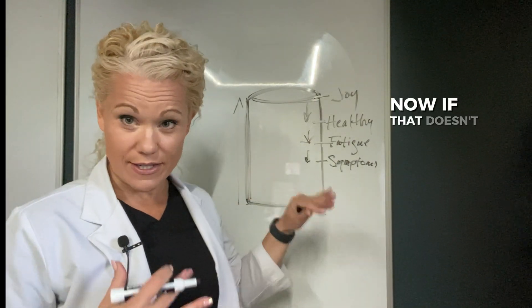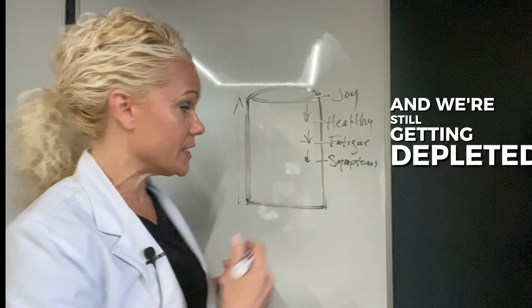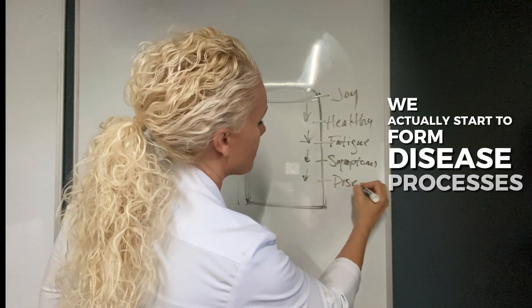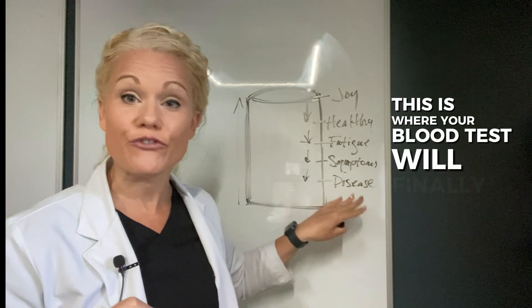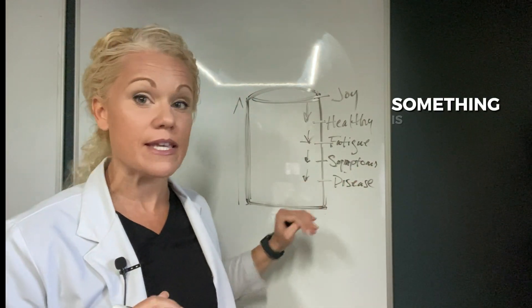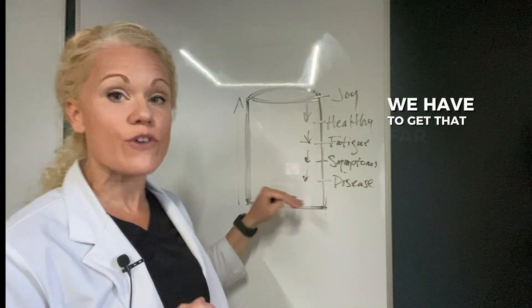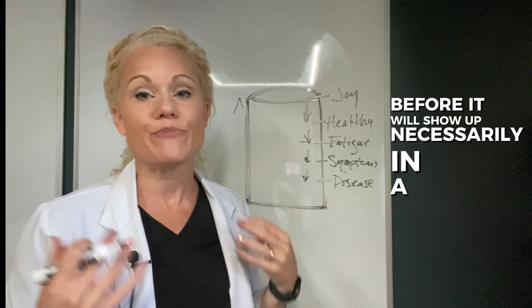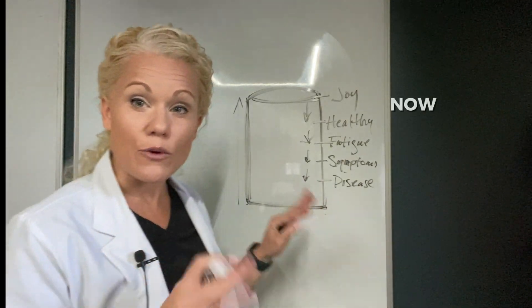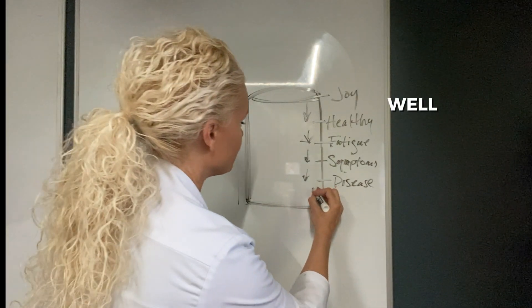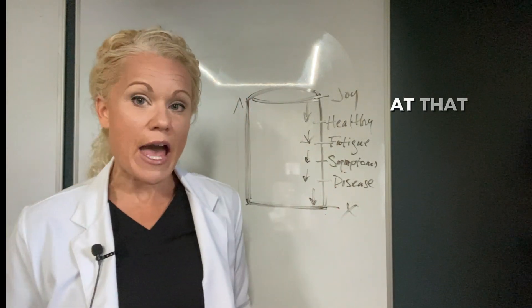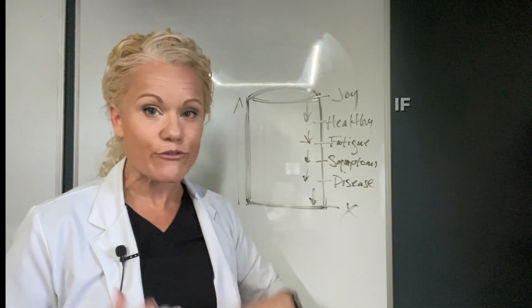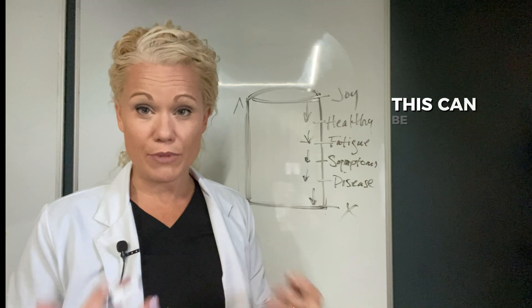Now if that doesn't get addressed and we're still getting depleted, well then yes we actually start to form disease processes. This is where your blood tests will finally say something is abnormal. We have to get that far down the tank before it will show up necessarily in a standard CBC chem panel. Now if that doesn't get addressed, well okay it's kind of game over at that point, but there are a lot of steps on the way down that if we catch what is happening, this can be reversed.